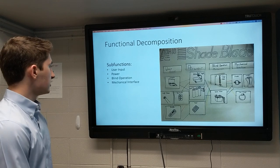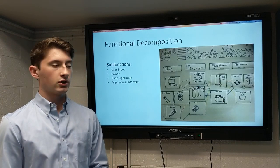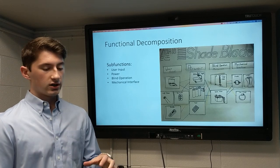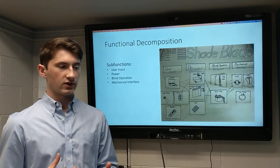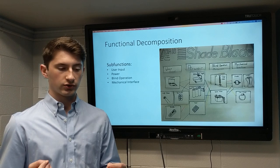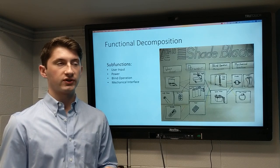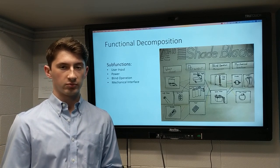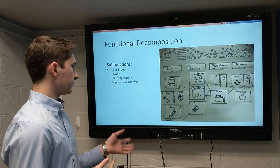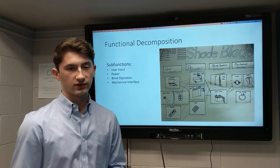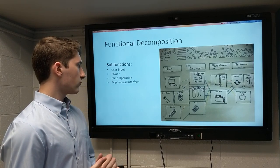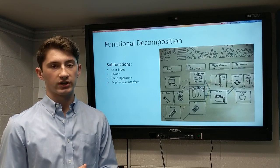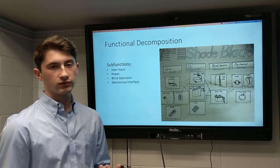For functional decomposition, we arranged four sub-functions, which were user input, power, blind operation, and mechanical interface. For user input, this is a way that customers, if they want the automatic blinds to open or close on their own input, say you need to change and the blinds are open, customers need to have a way to close the blinds. We set four functions: the computer, light sensor, Bluetooth, and remote. Of these four, the most viable option will most likely be the computer because most college students have computers.